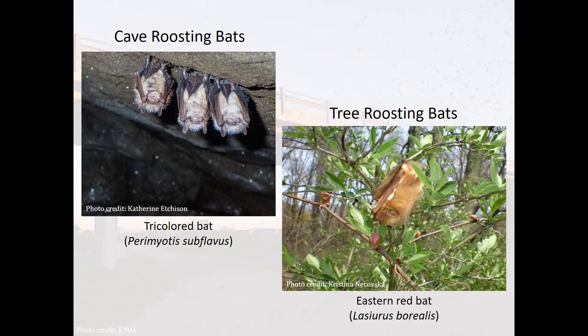In North America, insect-eating bats can loosely be characterized as cave-roosting bats or tree-roosting bats. Bat roosts are areas where bats sleep, rest, and hibernate. As such, bats need different roosting conditions at different times of the year. This typically varies by species, gender, and roost availability.